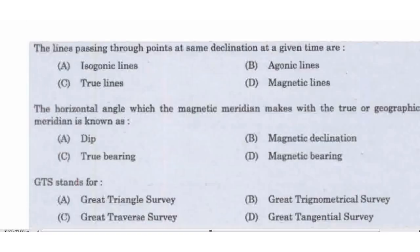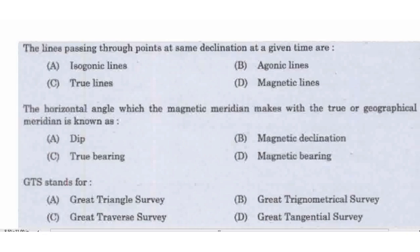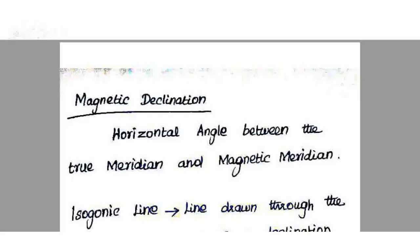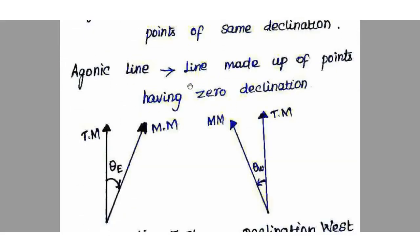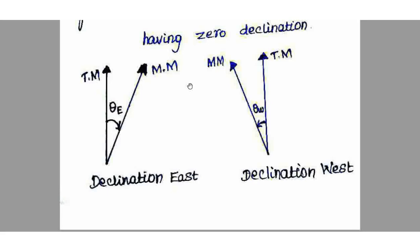Next question: the horizontal angle which the magnetic meridian makes with the true or geographical meridian is known as magnetic declination, or simply declination — right answer Option B. Declination east is positive and clockwise; declination west is negative.